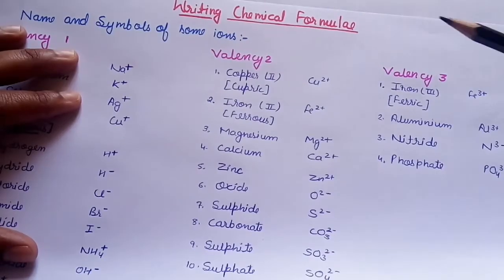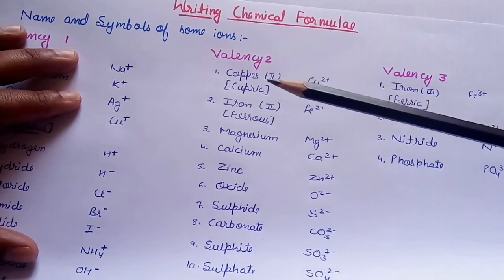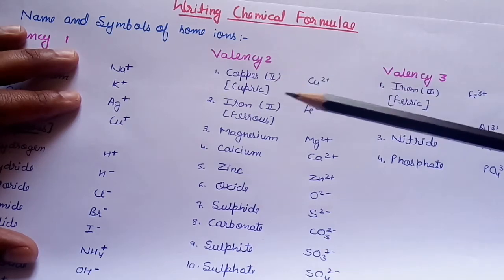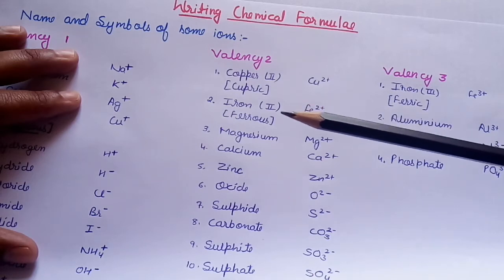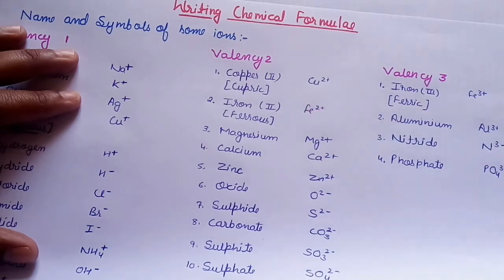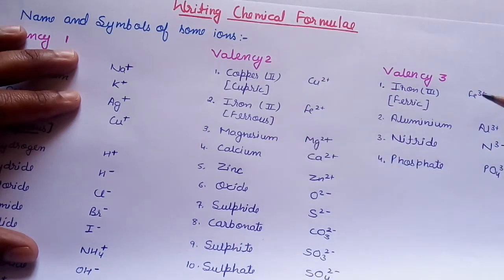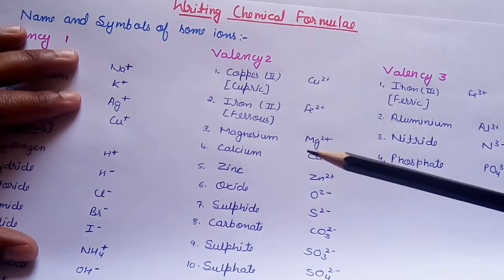Now, these are the ions having valency 2. Copper. Copper in its second valency we write it cupric. Then iron. Iron has tendency to show plus 2 oxidation state, I mean plus 2 valency as well as plus 3 valency. In plus 2 valency, we call it ferrous. While in plus 3 valency, we call it ferric.